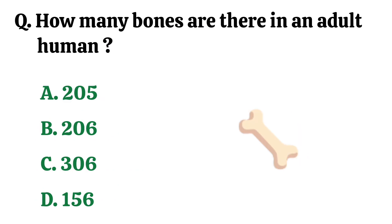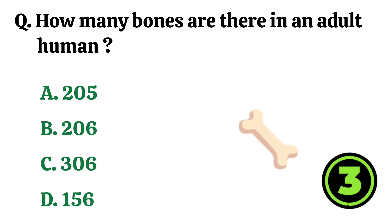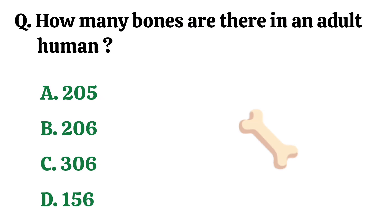How many bones are there in an adult human? The correct answer is option B. 206 bones.